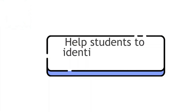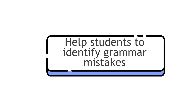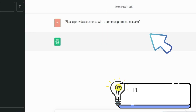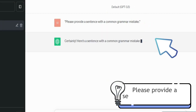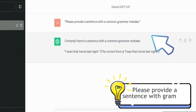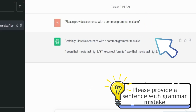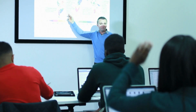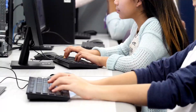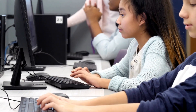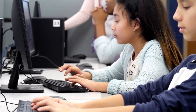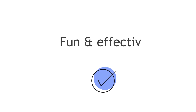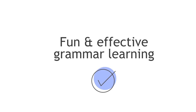You can also use this AI tool to help students identify grammatical mistakes. Tell your students to ask for a sentence with grammar mistakes from this tool, using a prompt like: 'Please provide a sentence with a common grammar mistake.' Then ask your students to identify the grammar errors — the purpose is to put theories into practice. As a teacher, you can do this activity in front of your classroom, or assign it as a group activity. Either way, you can get engagement from students and make grammar learning fun and effective.